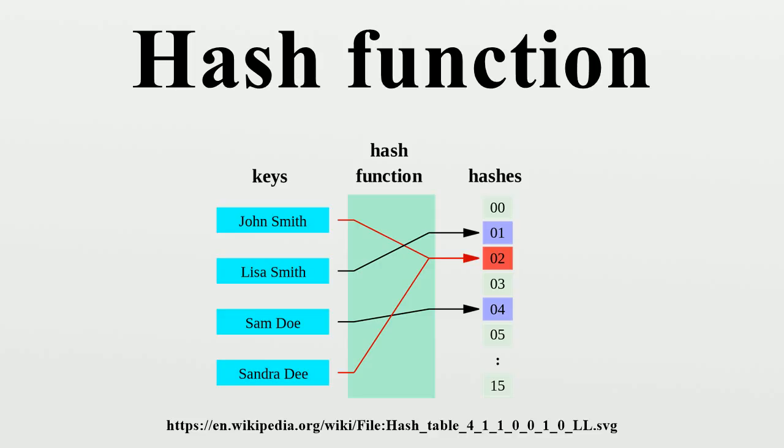Linear hashing and spiral storage are examples of dynamic hash functions that execute in constant time but relax the property of uniformity to achieve the minimal movement property. Extendable hashing uses a dynamic hash function that requires space proportional to N to compute the hash function, and it becomes a function of the previous keys that have been inserted. Several algorithms that preserve the uniformity property but require time proportional to N to compute the value of H have been invented.